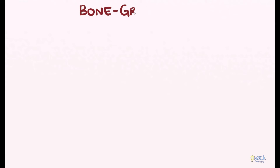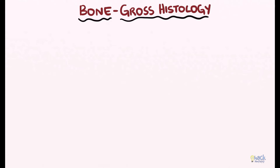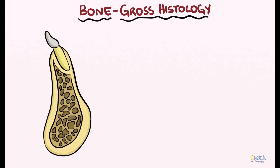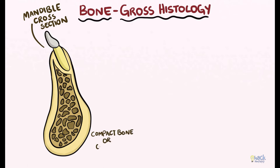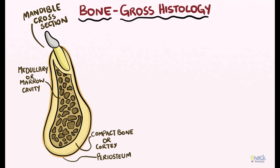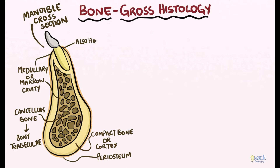Let's quickly go through the gross histology of bones so that we can better understand the pathophysiology behind suppurative osteomyelitis. Most bones, like the mandible for example, have a rigid outer compact bone or cortex forming an outer shell surrounding a medullary cavity or marrow cavity. The outside of the compact bone is lined by periosteum. The medullary cavity houses the medullary or cancellous bone comprising numerous interconnected bony trabeculae. The medullary cavity also harbors bone marrow and blood vessels.